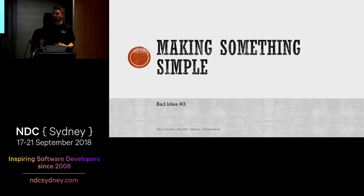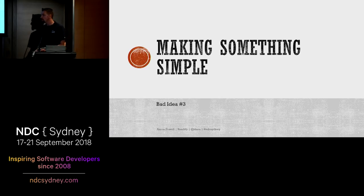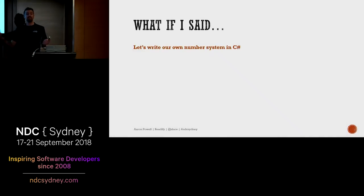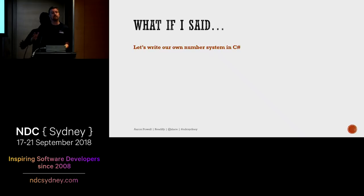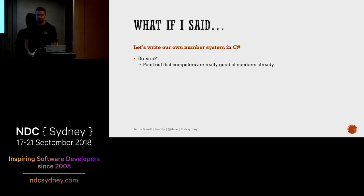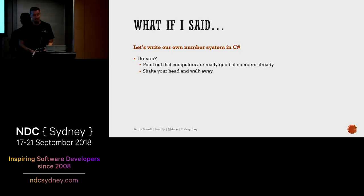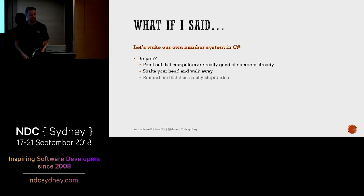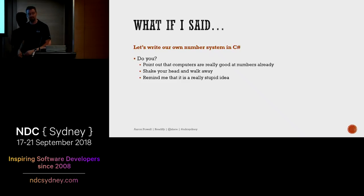Back to my stupid ideas and the kinds of dumb things I like to do. I had an idea: what if we said, let's write our own number system in C# or JavaScript or pick your language? You might look at me and say computers know how to do numbers well — it's a pretty well solved problem. We all know that 2 plus 2 equals 5 for extremely large values of 2. But it can't be that hard to create your own implementation of integer values. Let's ignore floating points, decimals, and doubles — let's just start with integers.